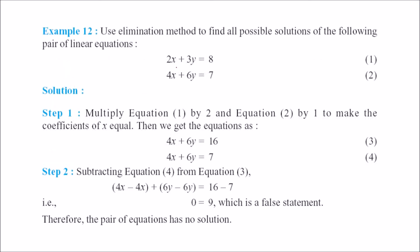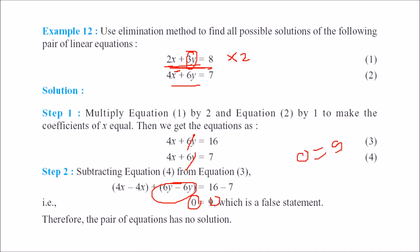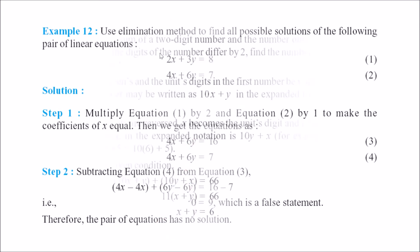Let's take another example: 2x plus 3y equals 8, and 4x plus 6y equals 7. If we multiply the first equation by 2, the y-terms both become 6y and we can eliminate them. After elimination we get 0 equals 9, which is false — this means there are no solutions.